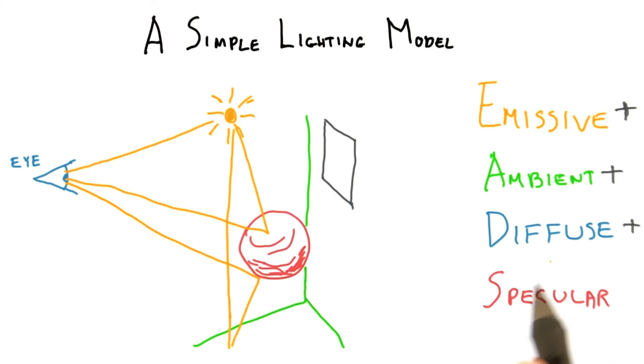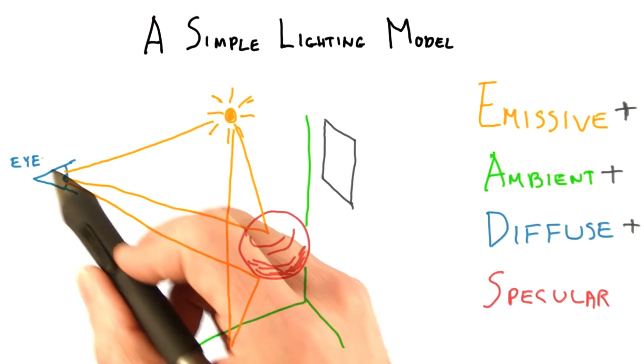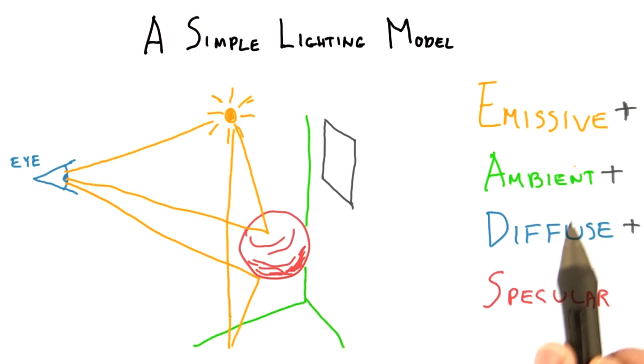The diffuse and specular components are computed based on the lights in the scene, while the emissive and ambient are essentially independent of these. The diffuse term can be thought of as a flat, matte finish, and specular can be thought of as the shininess of an object.